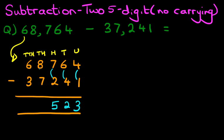The thousands column, 8 minus 7. That's right, it is 1.